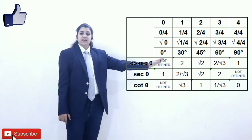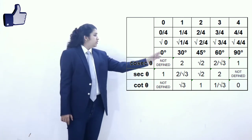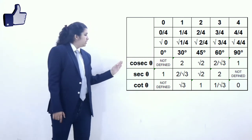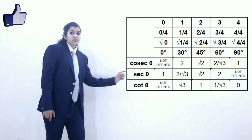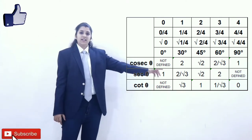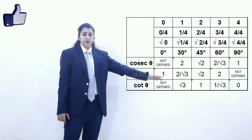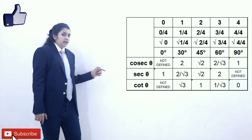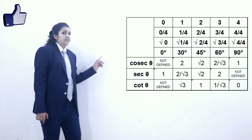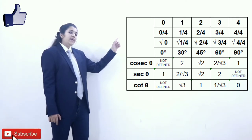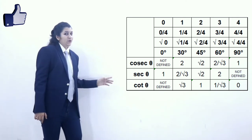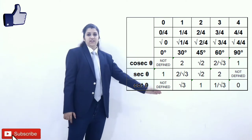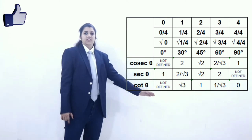Tan 30 degrees is actually 1 upon root 3, so cot 60 degrees is 1 upon root 3. And last, tan 0 is 0, so cot 90 degrees is 0.